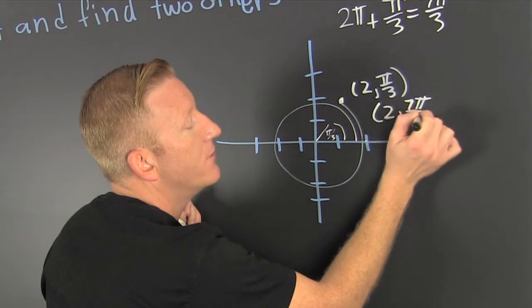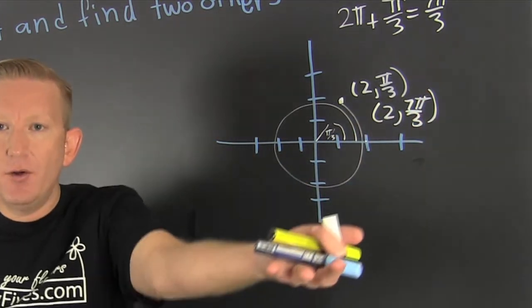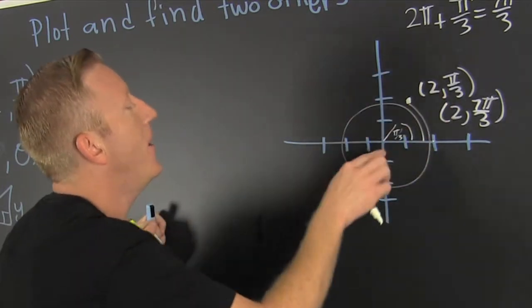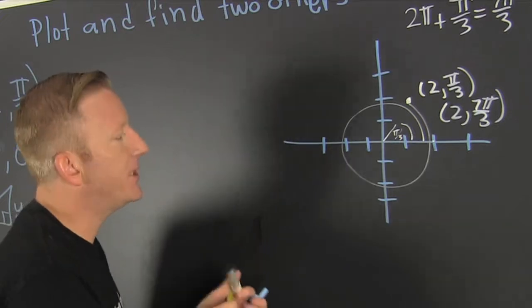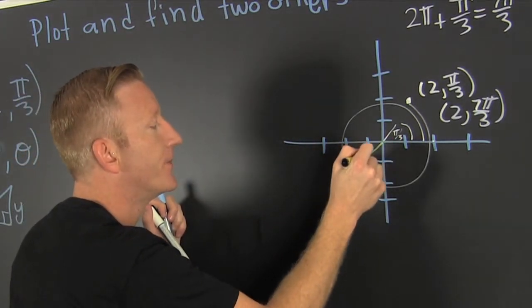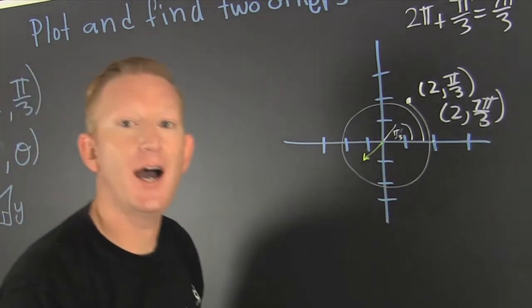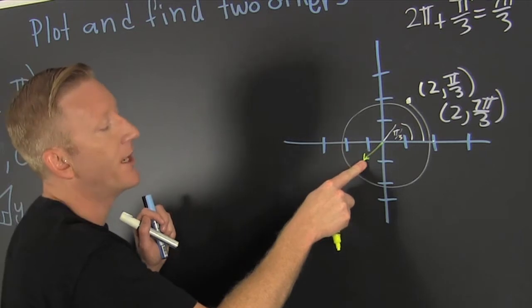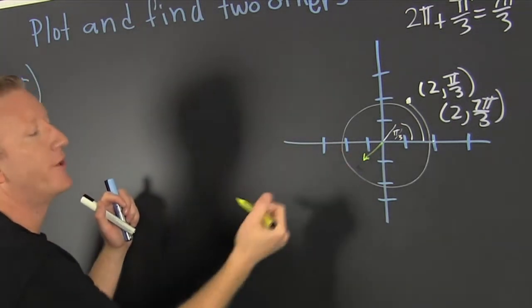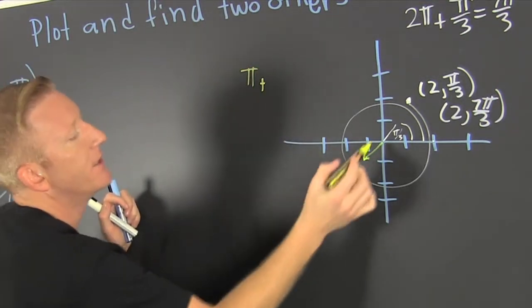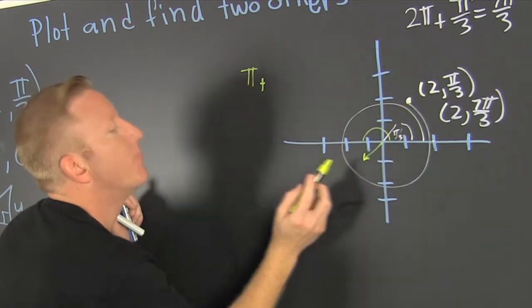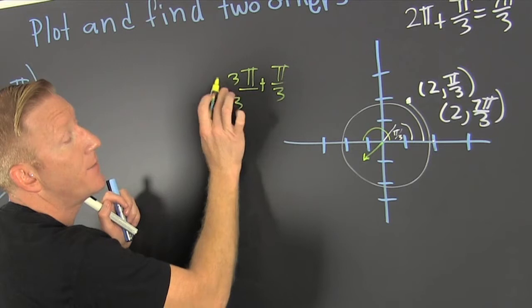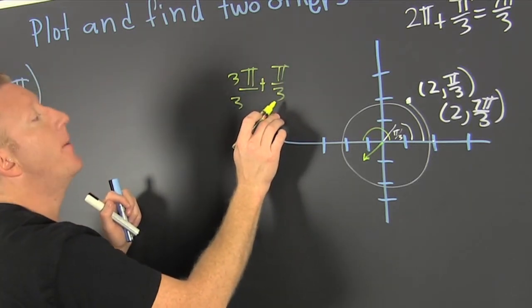But wait, there's more. We don't always have to have a positive r. We could have a negative r. What does that mean? That means I'm going to be pointed in this direction, but instead of going forward, I'm going to extend my arc backwards. I need to find that angle, or that radian measure. I'm gonna take my pi, and then I need to go pi over 3 more. I add that - common denominator - 4 pi over 3.